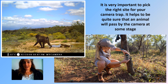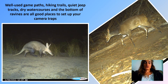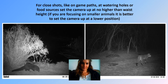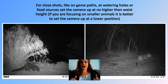It's very important to pick the right site for your camera trap — it helps to be quite sure that an animal will pass by the camera at some stage. Well-used game paths are a good place to start, as are hiking trails, quiet jeep tracks, and dry water courses often used by animals at the bottom of ravines. For close shots on game paths or watering holes, set the camera no higher than waist height, and if you're specifically trying to capture smaller mammals, lower down is even better.